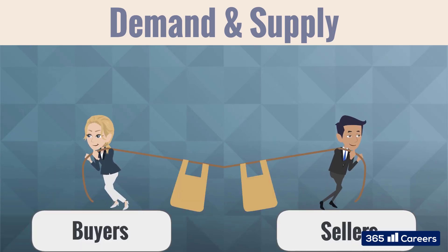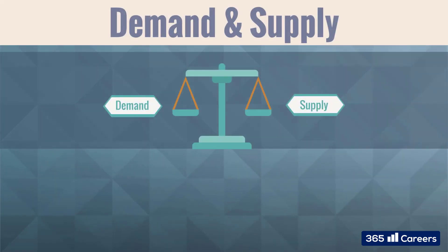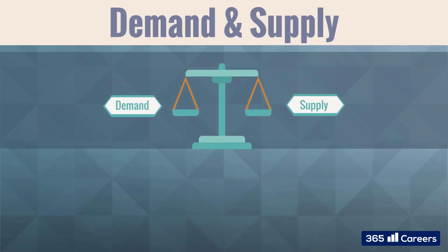Demand and supply examine how the interactions between buyers and sellers determine the price and quantity of a product. Basically, the world of economics consists of two types of players. On one side, we have consumers who buy goods, and on the other, firms that sell goods.